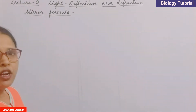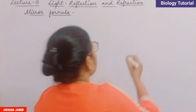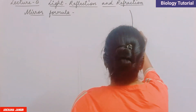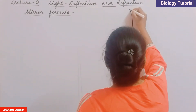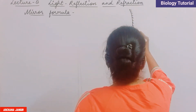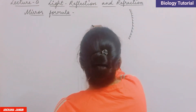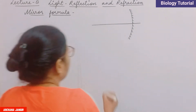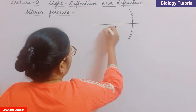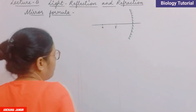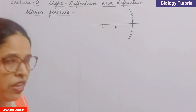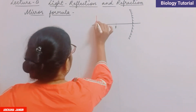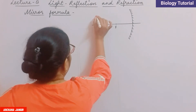First of all we have to draw the diagram as usual. Here is the diagram. This is the concave mirror. This is the principal axis of the mirror. Here is the focus and this is the center of curvature. We have to place an object in between the center of curvature and infinity.